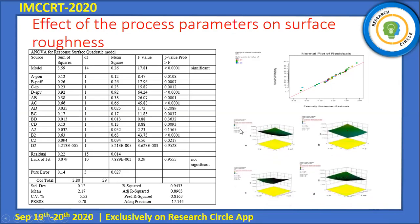We can also see the effect of peak current, spark gap voltage, and surface roughness. In figure A, pulse off time versus peak current: when pulse off time increases, surface roughness decreases. In figure B, spark gap voltage versus peak current: when spark gap voltage increases, surface roughness increases slightly, and peak current also contributes a small increase.